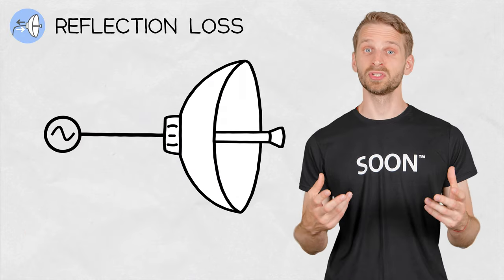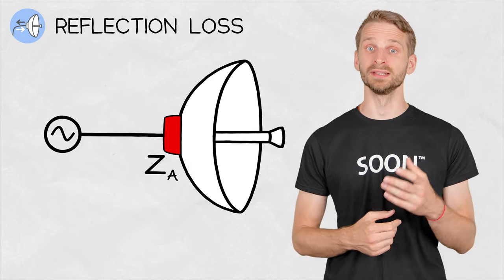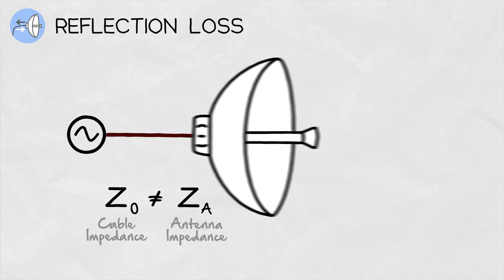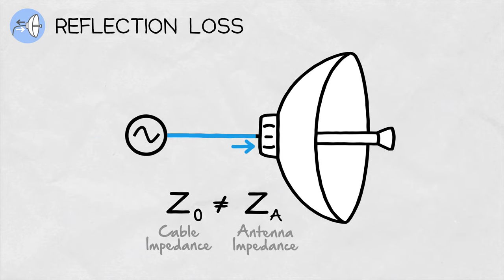The reflection loss is caused by the impedance mismatch of the antenna input port and the cable feeding it. The bigger the difference, the more power is reflected from the antenna port, decreasing the antenna radiation efficiency. Check our older Inside Wireless episode for more details on this topic.